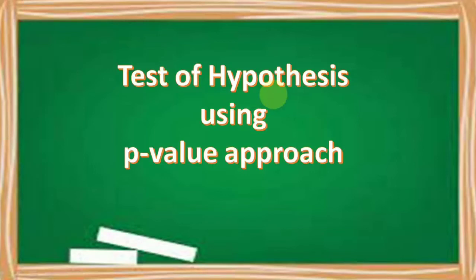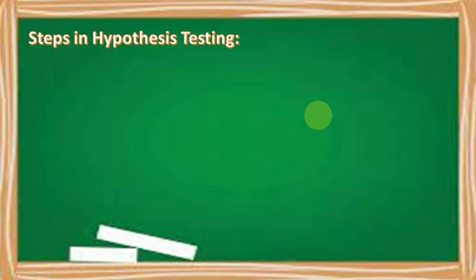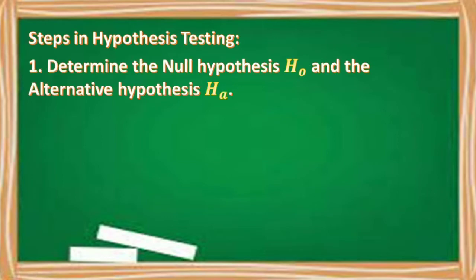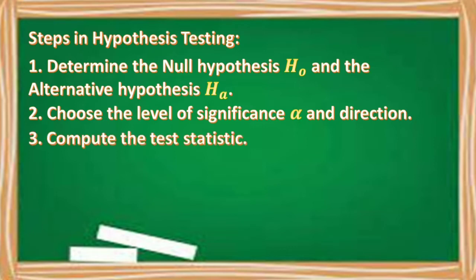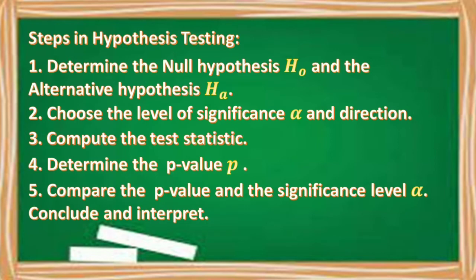We're going to discuss test of hypothesis using the p-value approach. The steps in hypothesis testing are: number one, determine the null hypothesis H₀ and the alternative hypothesis Hₐ. Number two, choose the level of significance or alpha and direction. Number three, compute the test statistic. Number four, determine the p-value. Number five, compare the p-value and the significance level or alpha, then conclude and interpret.